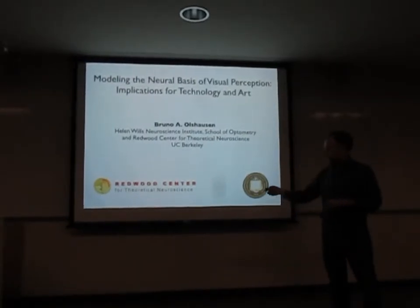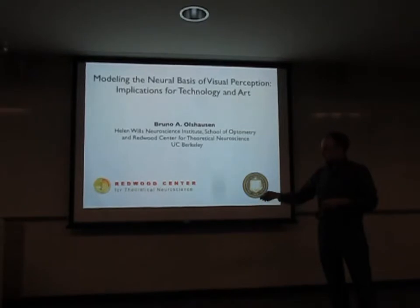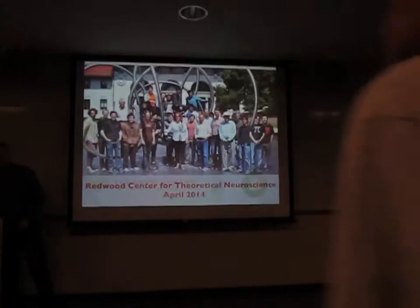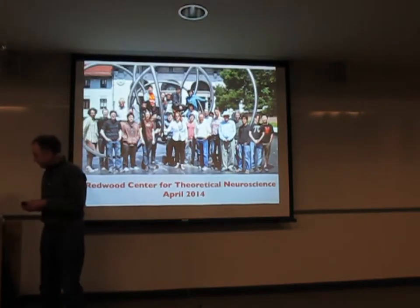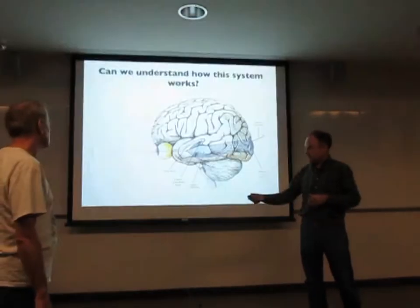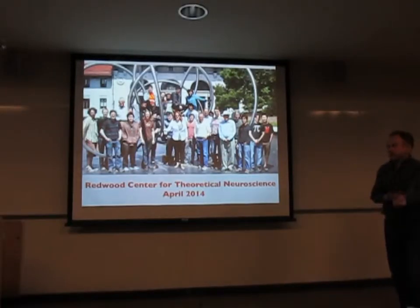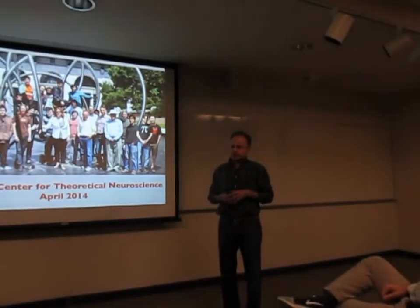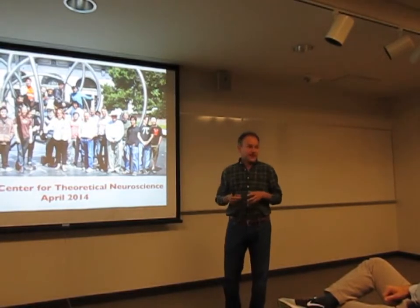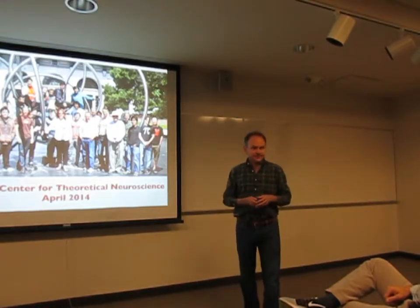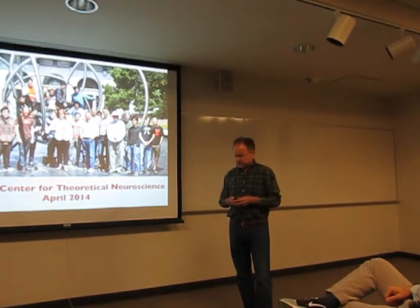I'll start by introducing the group that I work with at UC Berkeley, the Redmond Center for Theoretical Literature Science. Basically a group of faculty and students coming from a variety of different backgrounds — from math, physics, and engineering — and we're trying to apply many of the quantitative methods in these fields to understanding the brain. We have a weekly seminar series on Wednesdays, and you're welcome to join us to find out more about what we do.